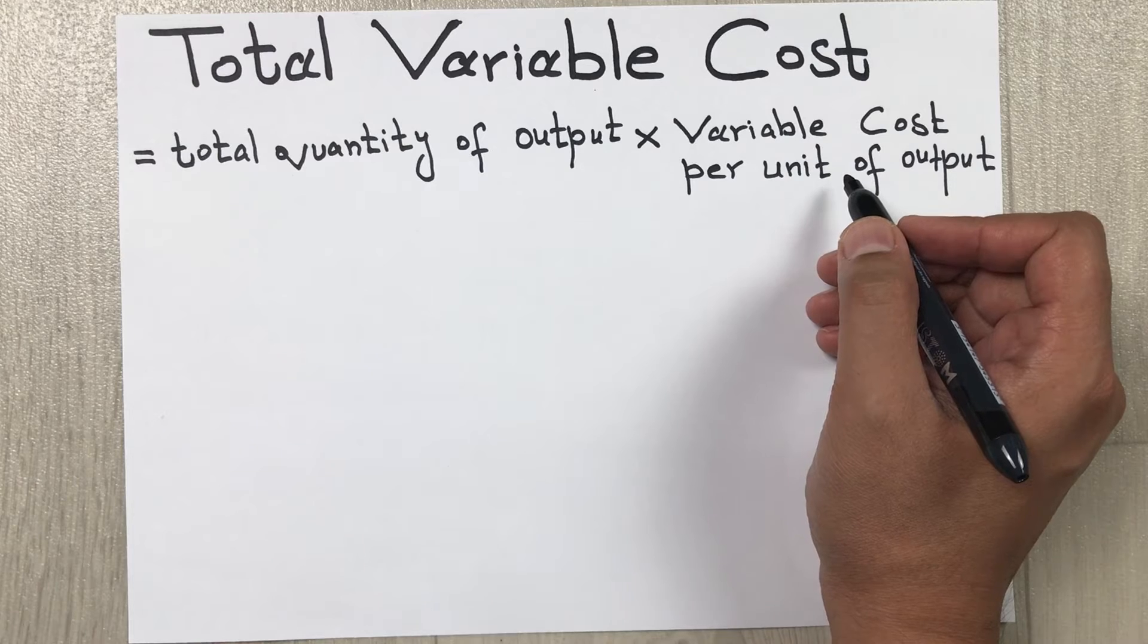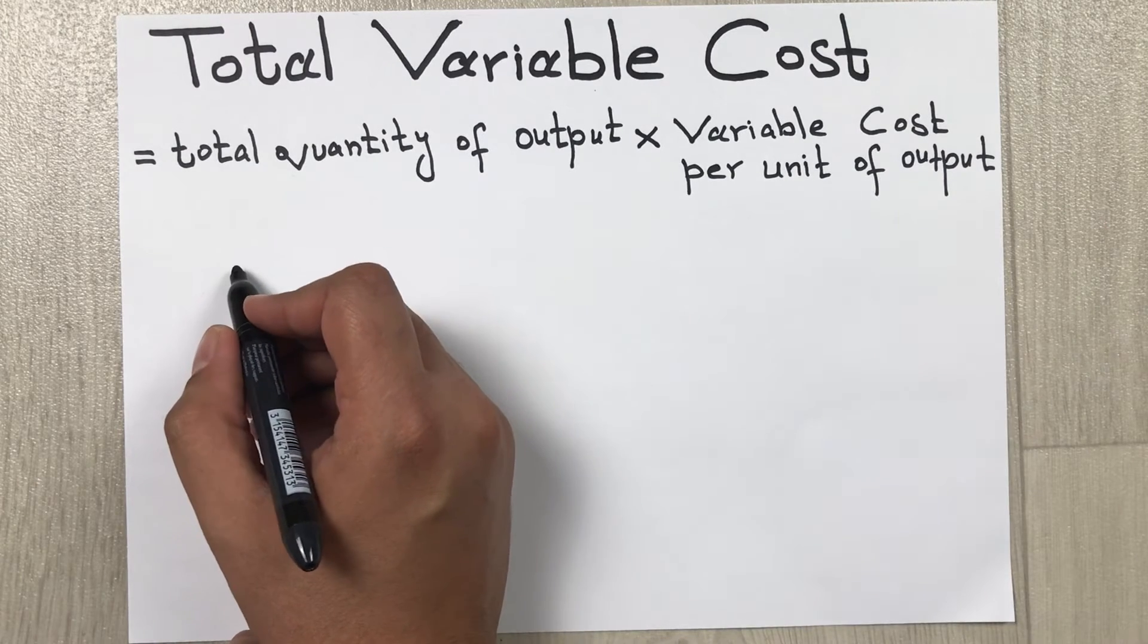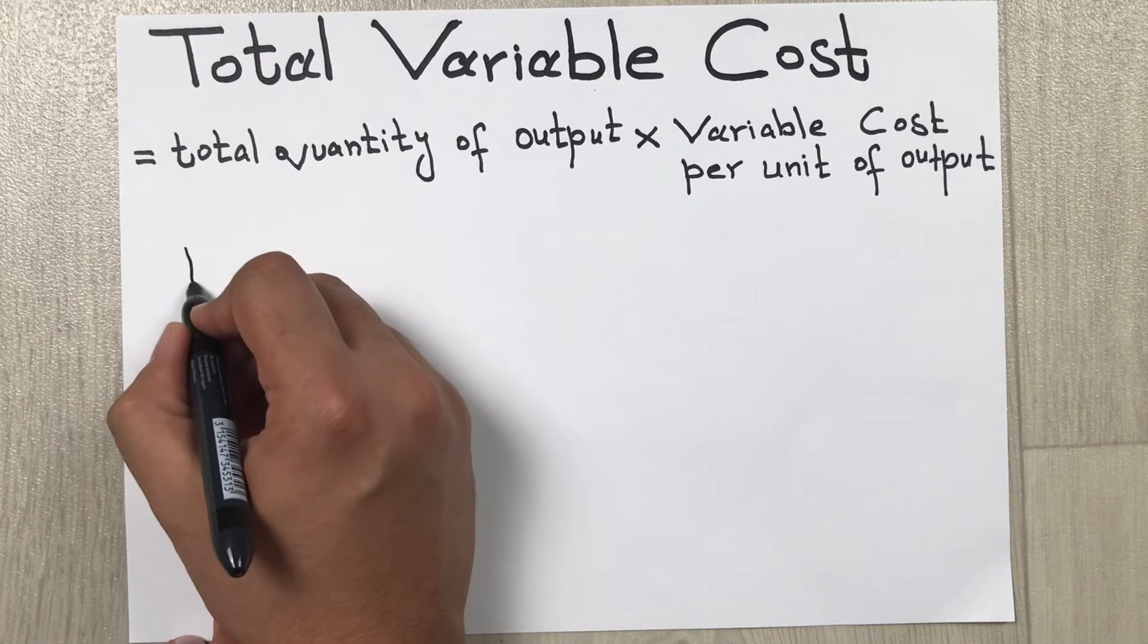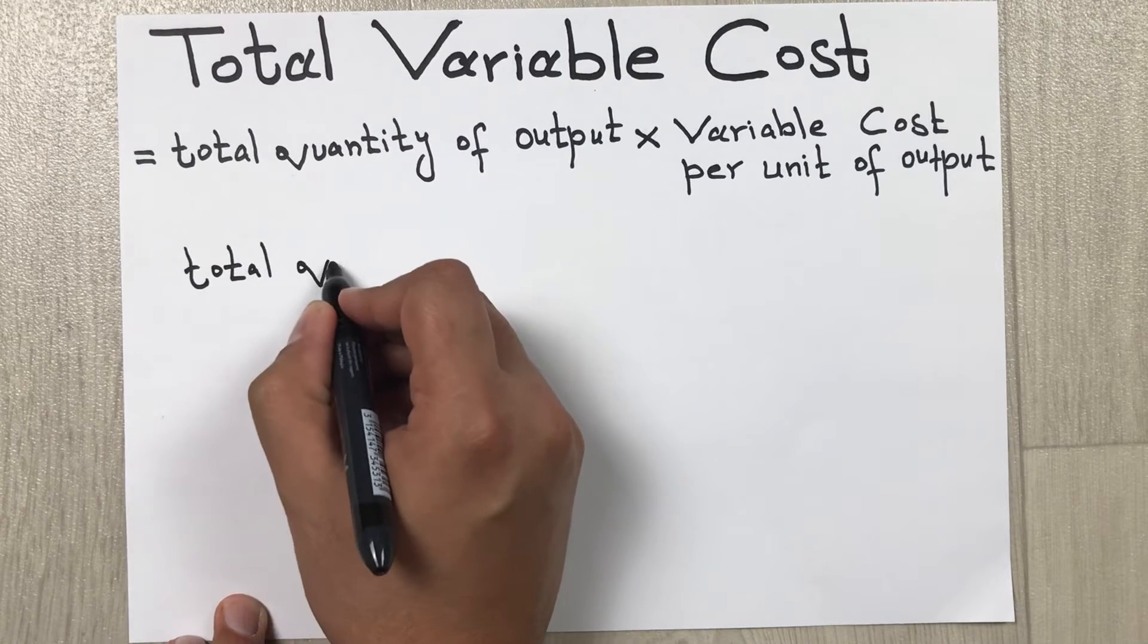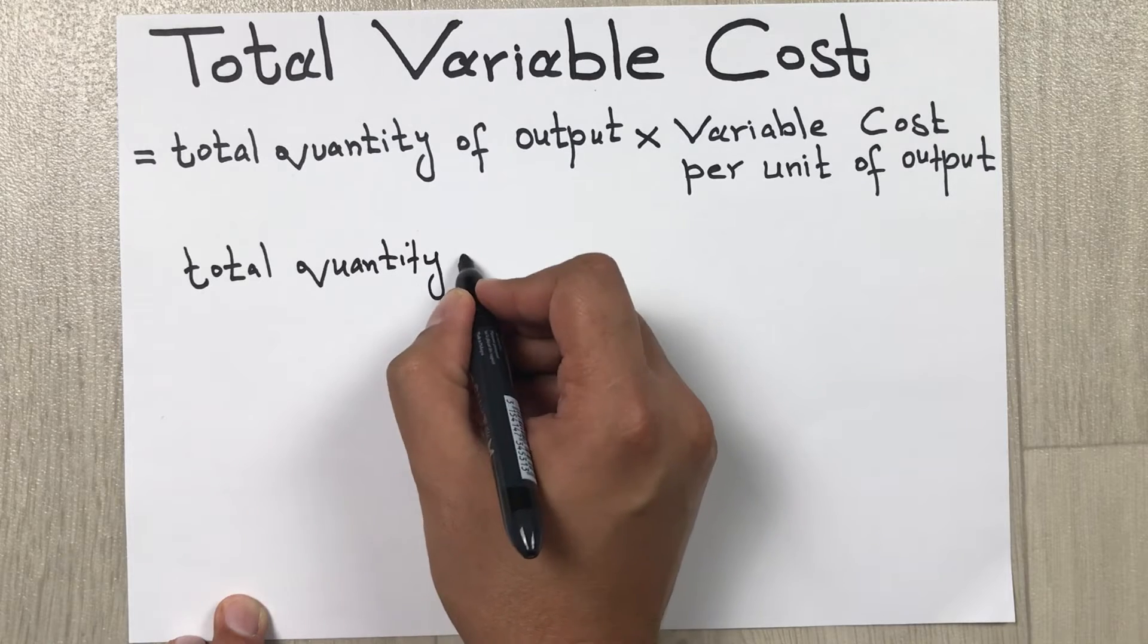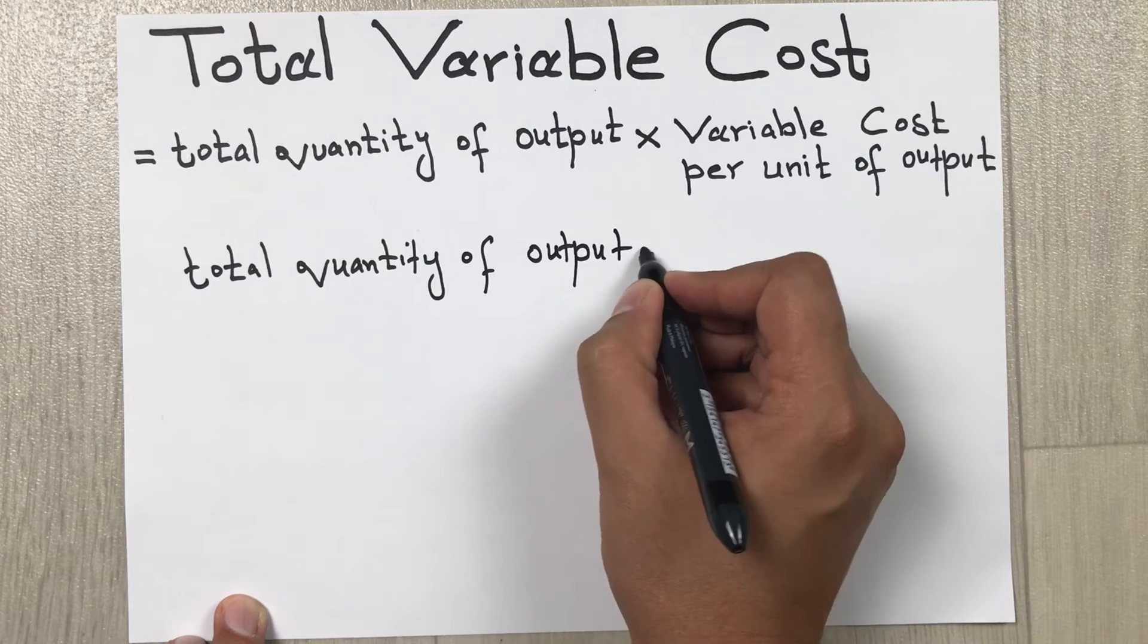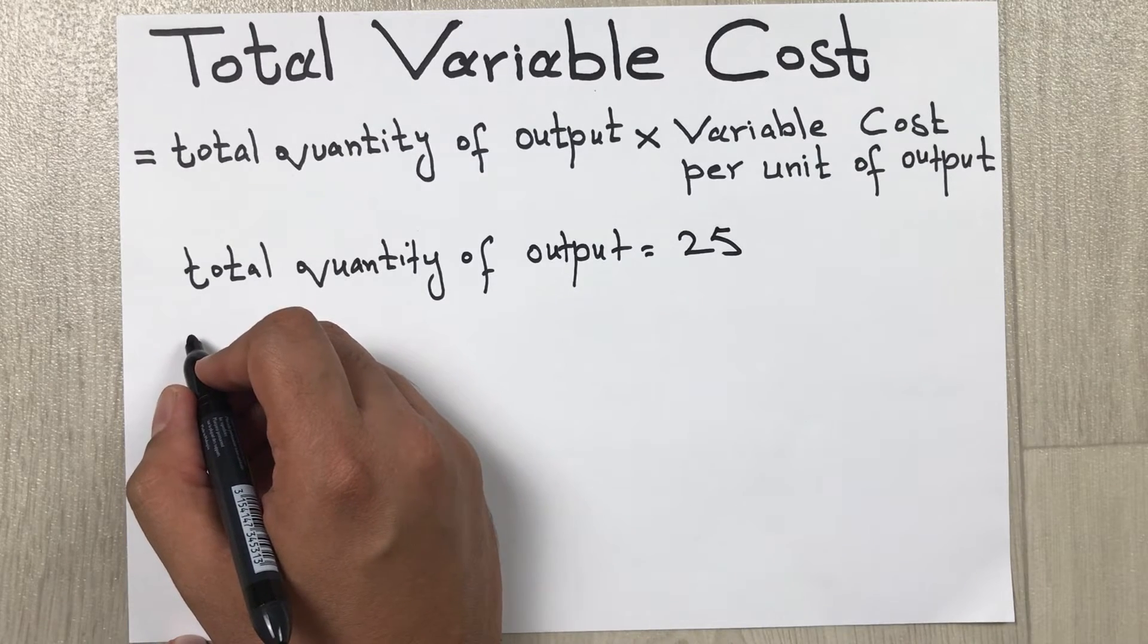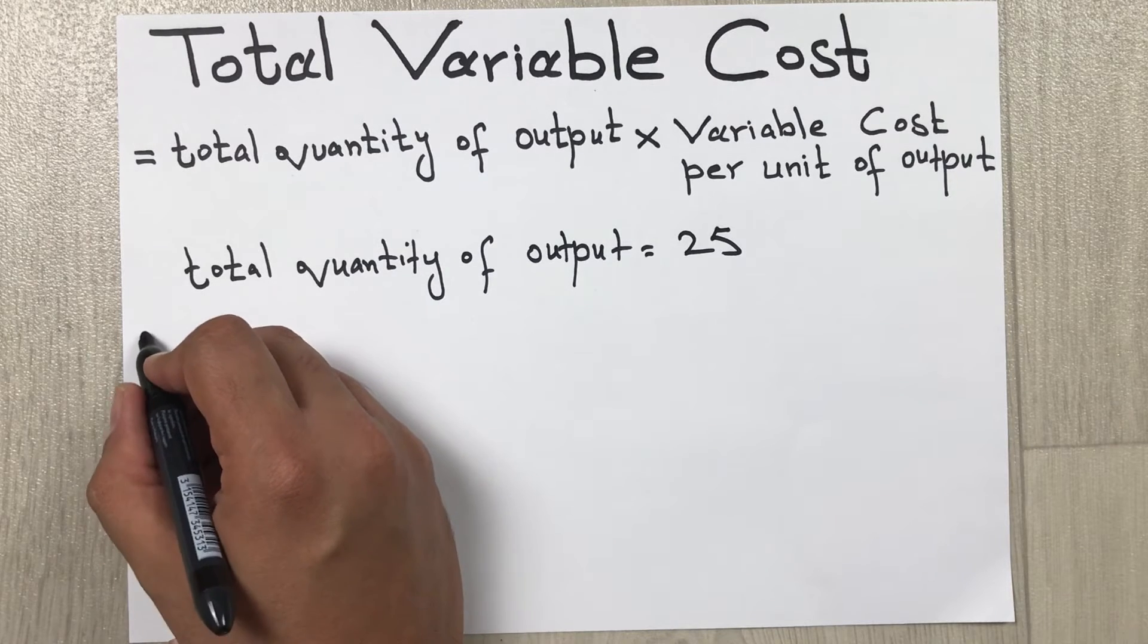Let's say the total quantity of output is 25, and the variable cost per unit of output is 35.